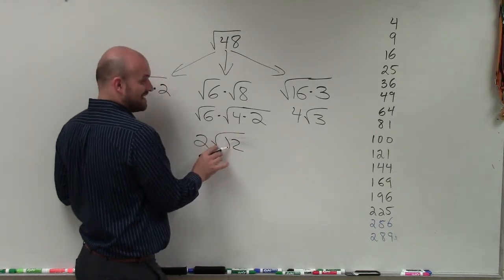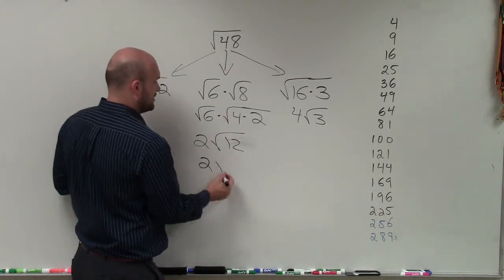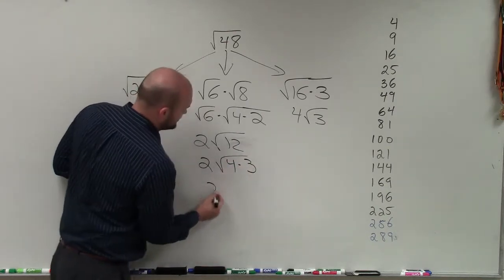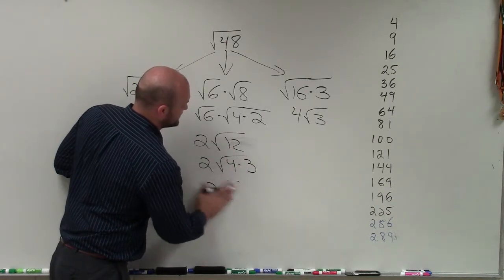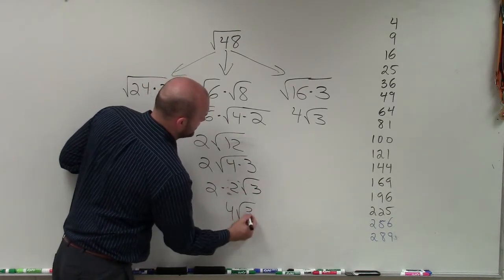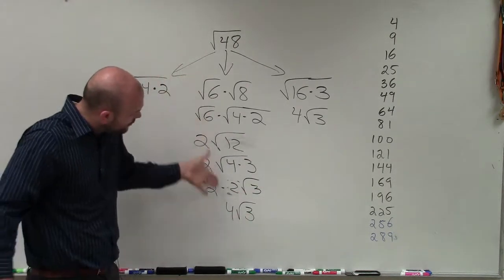Then you can break this down again with 4. So it'd be 2 times 4 times 3. Then 2 times 2 times square root of 3, which is 4 square root of 3. And you can see how much extra work I did with this, which would be the same over here.